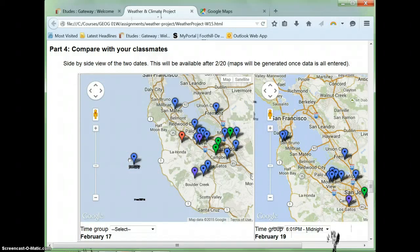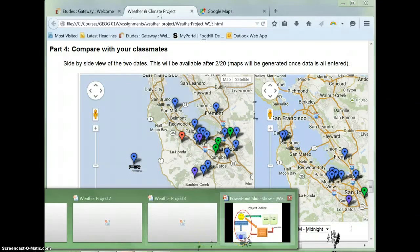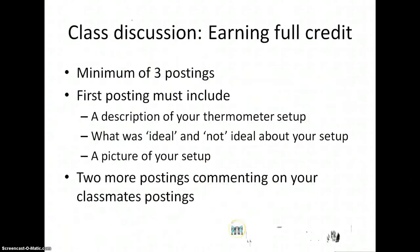The next thing we will look at is what you need to do to complete the class discussion. To earn full credit, you need to make a minimum of three postings. Your first posting should include a description of the thermometer setup and a discussion of what you think affected the temperature in your area — for more on that, see the second video in this series. Finally, attach a picture of your thermometer and setup. For full credit, you also need to respond to two classmates and engage them in discussion.